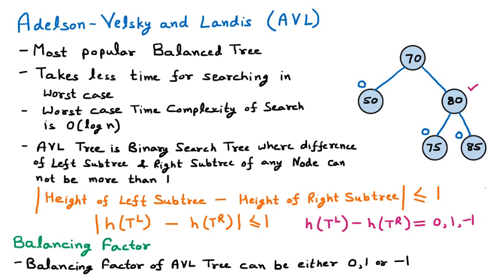For node 80, we focus only on its left and right subtrees. On the left-hand side of node 80, there is only one level. On the right-hand side, there is also only one level. Since balancing factor is height of left minus height of right, it is 1 minus 1, which equals 0. So the balancing factor of node 80 is 0.